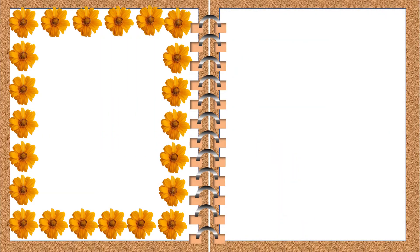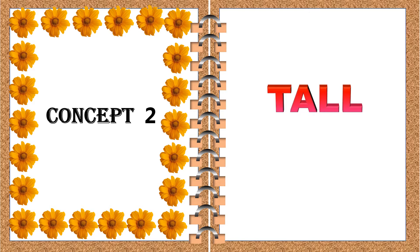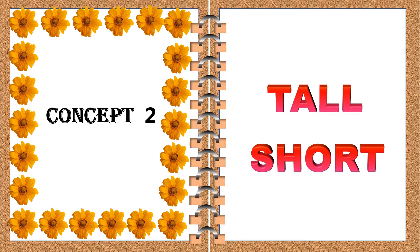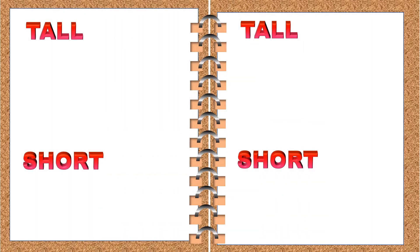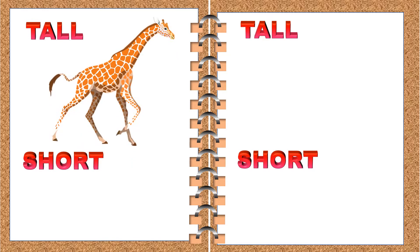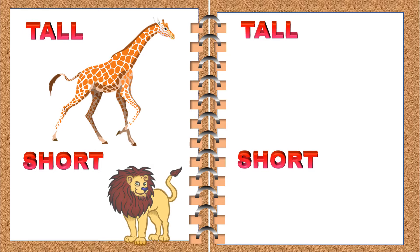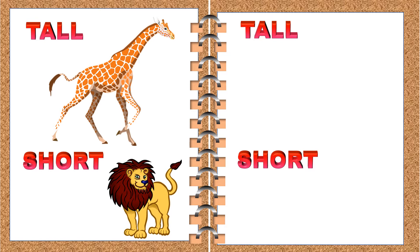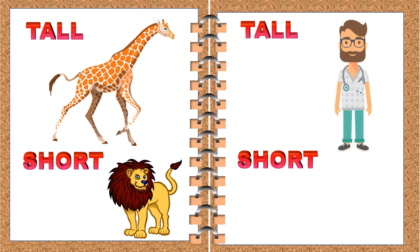Now let's see our second concept. The book is showing us the second concept of tall and short. Let's look at some of the examples. Giraffe is tall. Lion is tall. This man is tall. This boy is short. This man is tall.